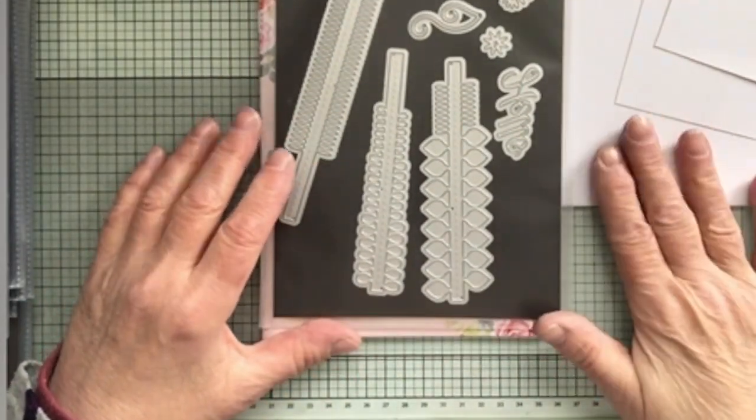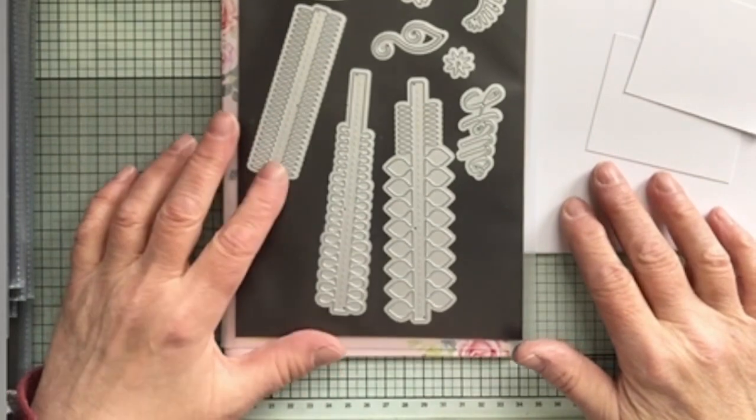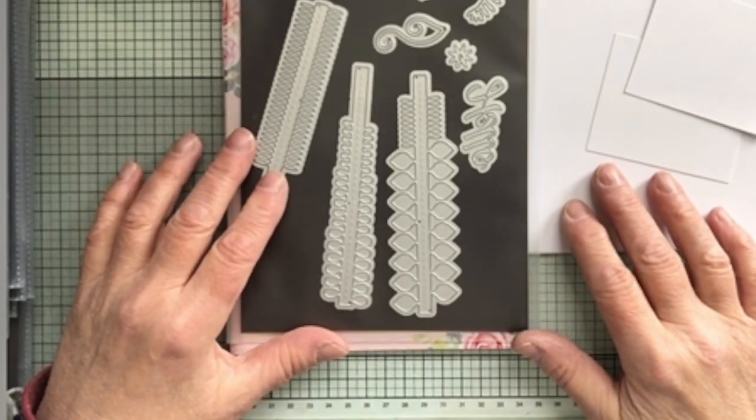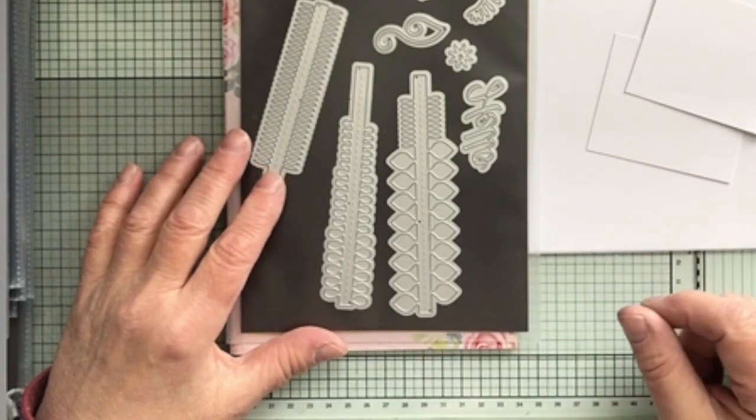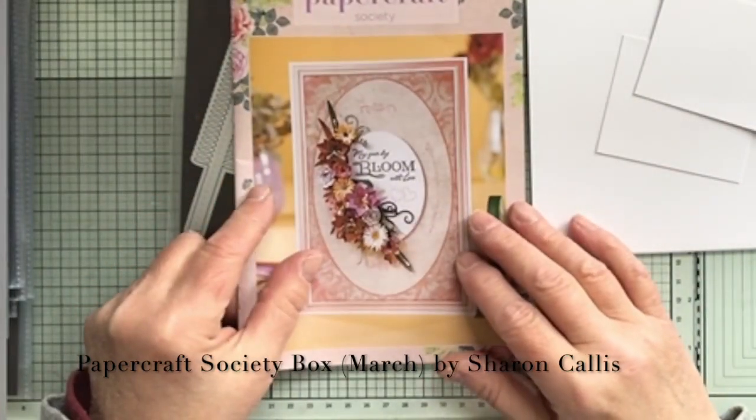Hi, this is Deb back in the craft room. Today I'm going to do a card that was inspired by Sam Calcott. She did a card on her live this week using Sharon Callis's Papercraft Society box which was from March I think.